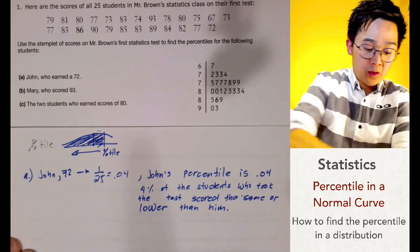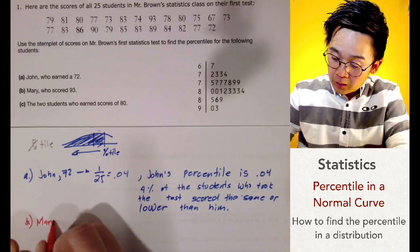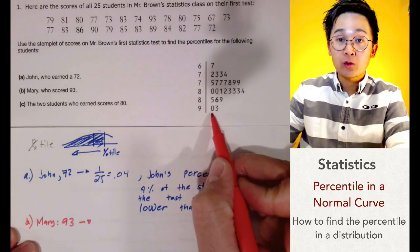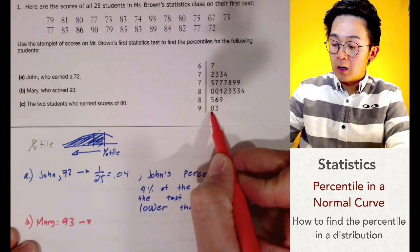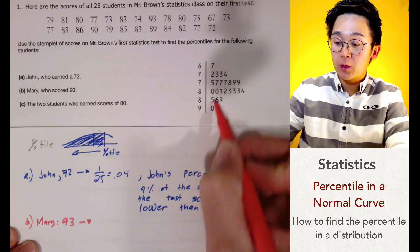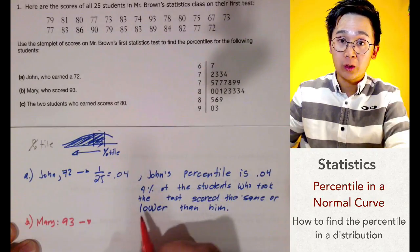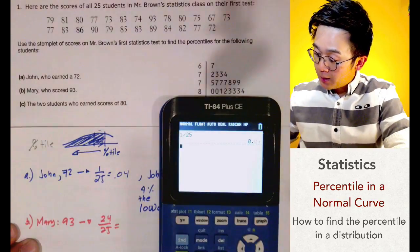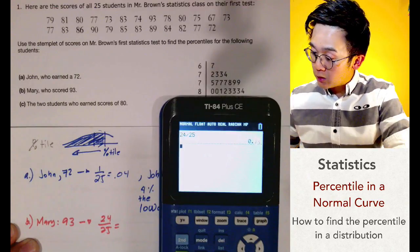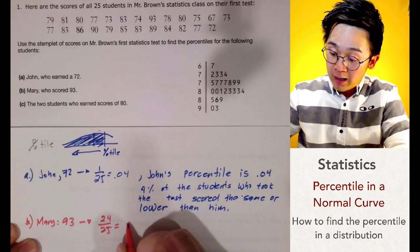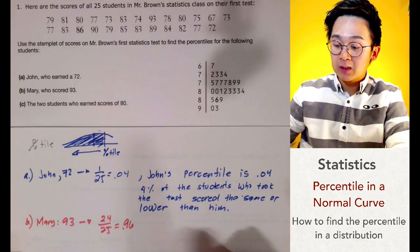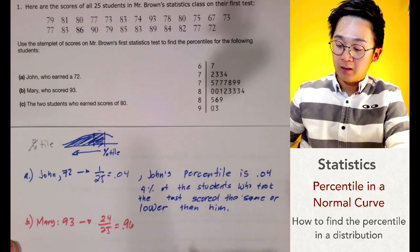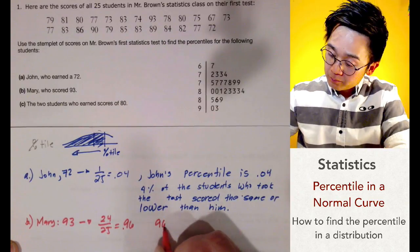Now if we compute the percentile for Mary, who scored 93 — the highest score — there are 24 students in the class who scored lower than her. So we divide 24 by 25, which gives us 0.96. Her percentile rank is 96, meaning 96% of the students scored the same or lower than Mary.